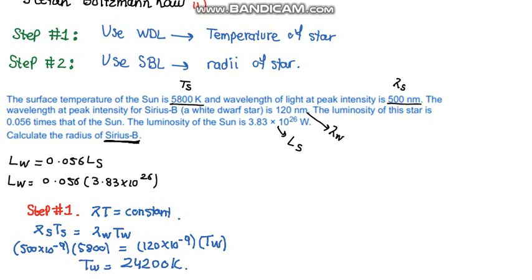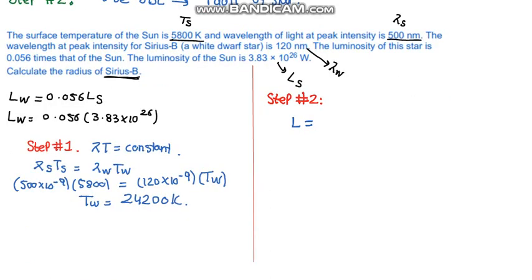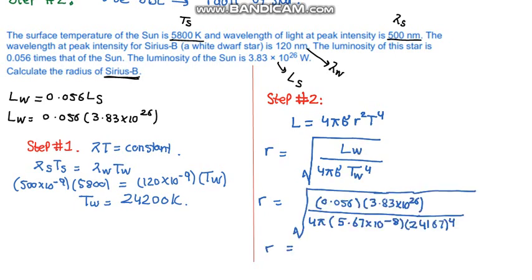And now it's time to find the radius of Sirius B using the Stefan-Boltzmann law. We will be using the formula L is equal to 4πσr²T⁴. Making r the subject of the expression, that becomes square root of L over 4πσT⁴. Now we have the luminosity, the temperature, and we know the constant σ. Just plug in the values and find the radius of the Sirius B star.